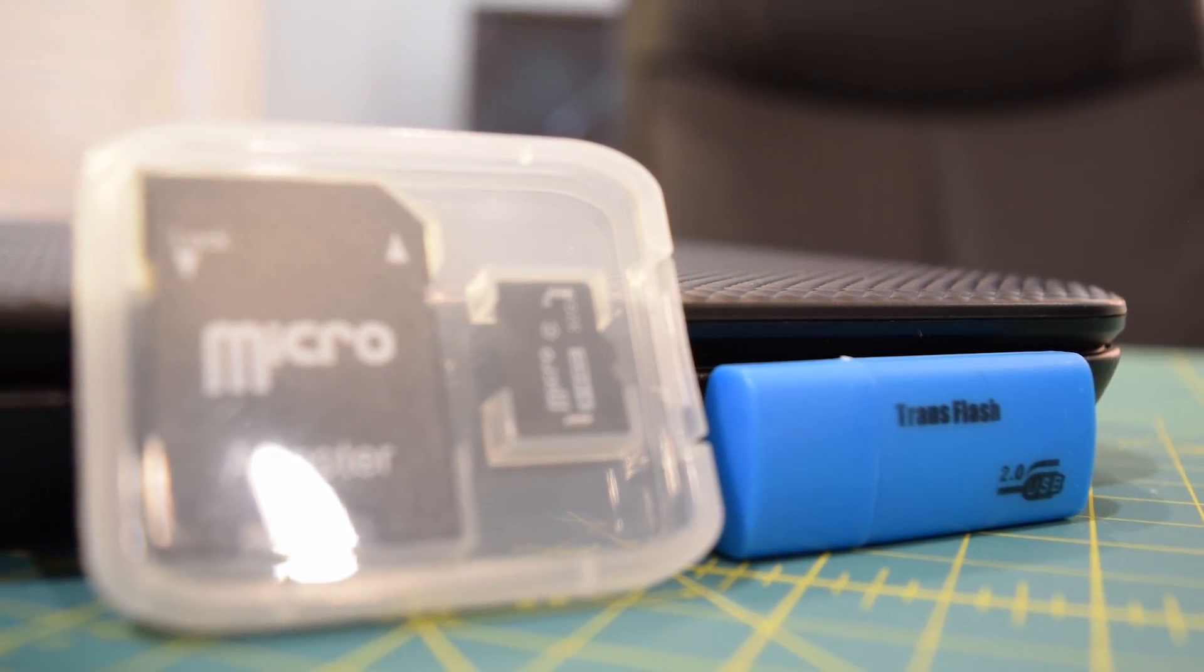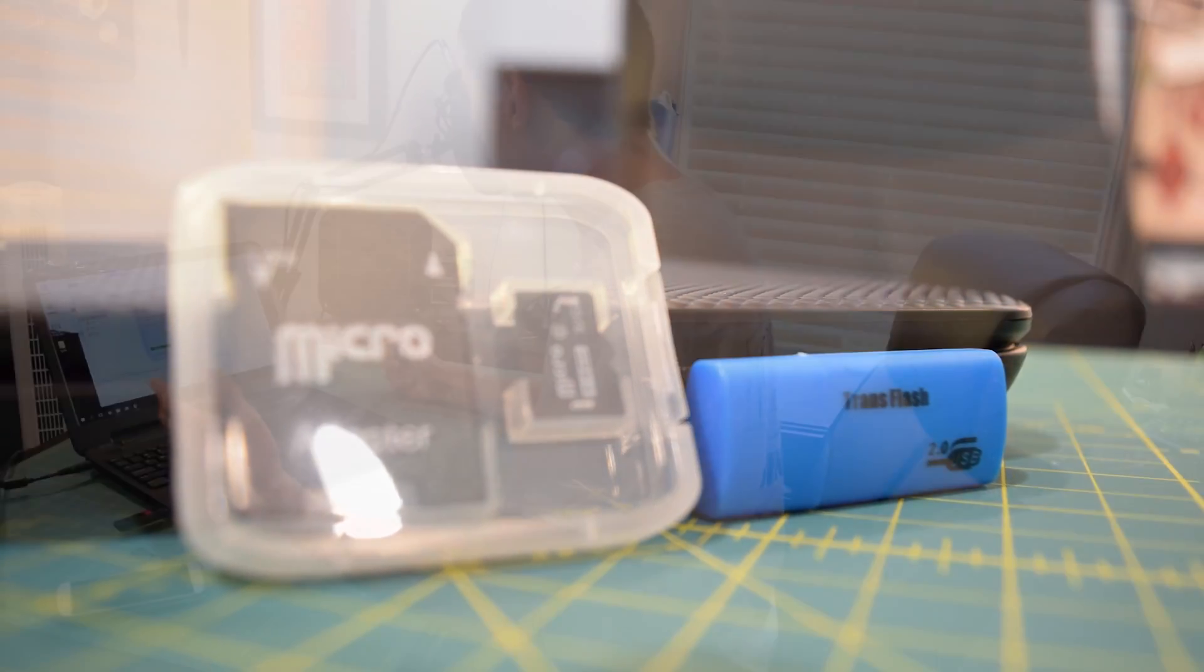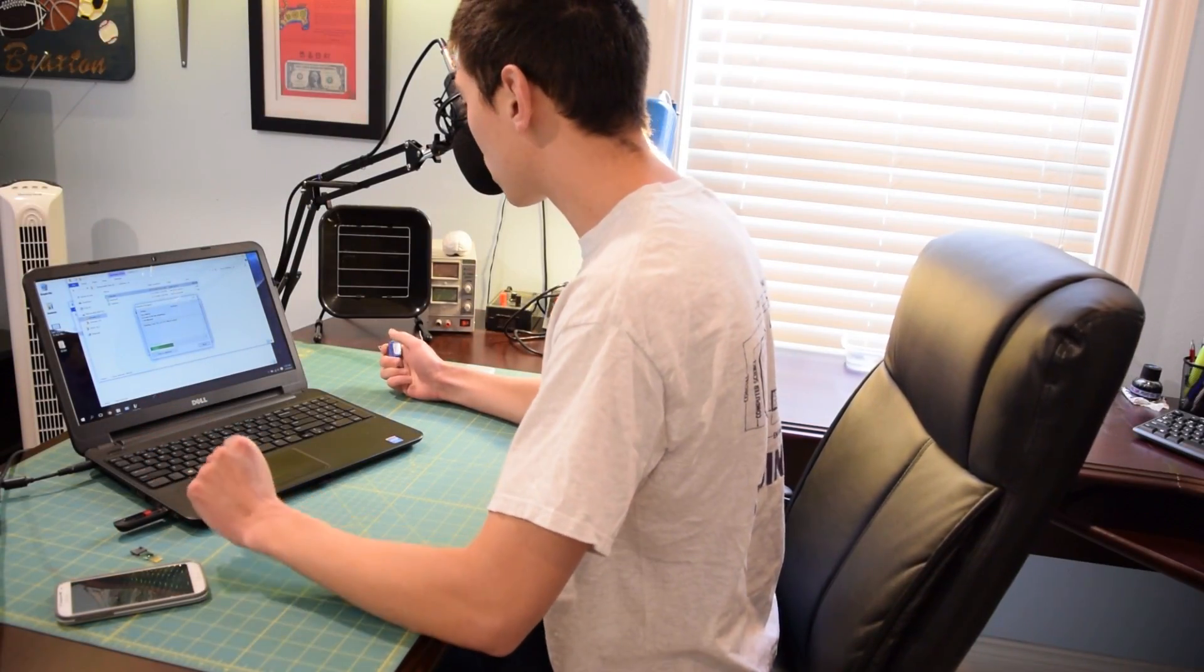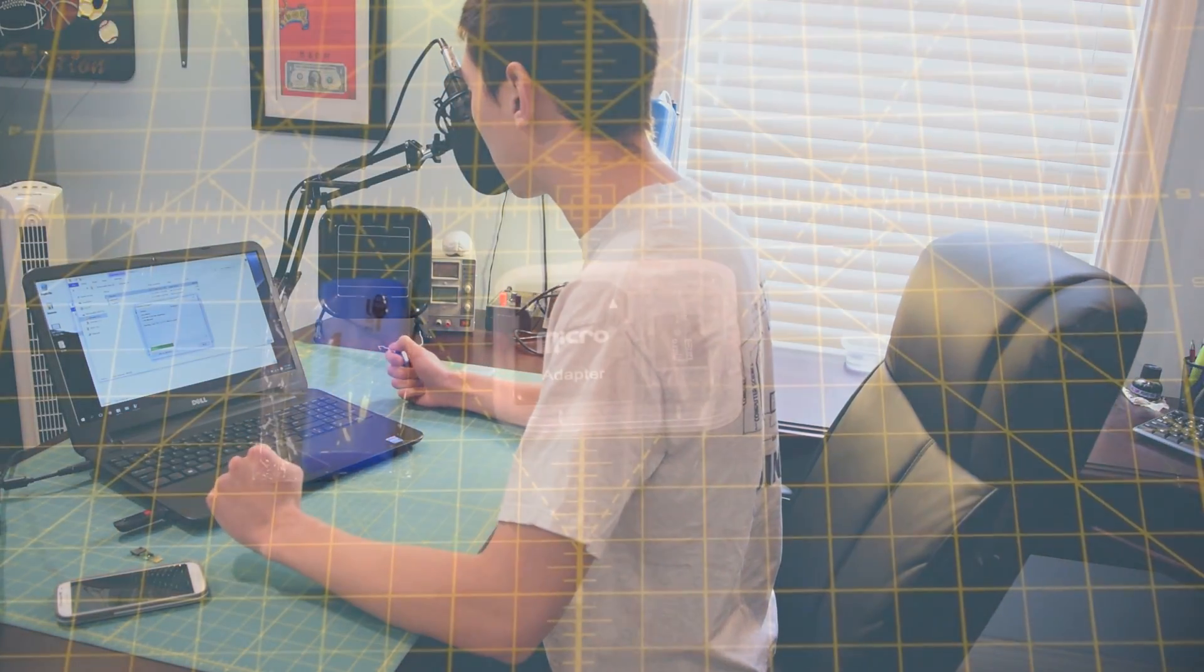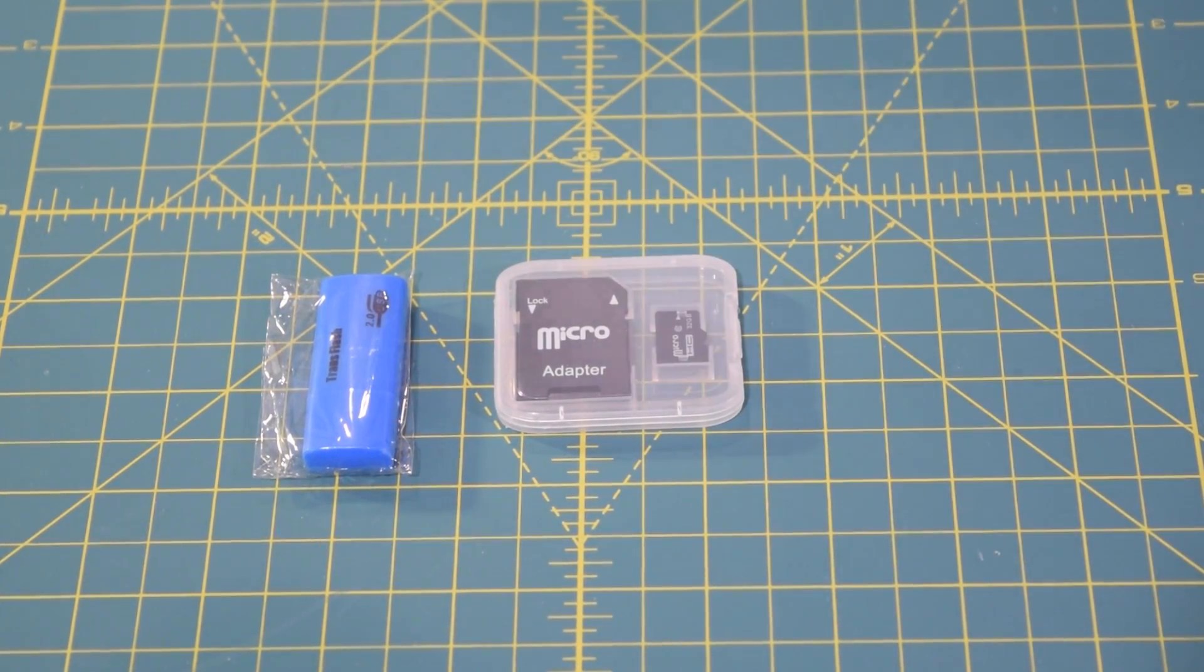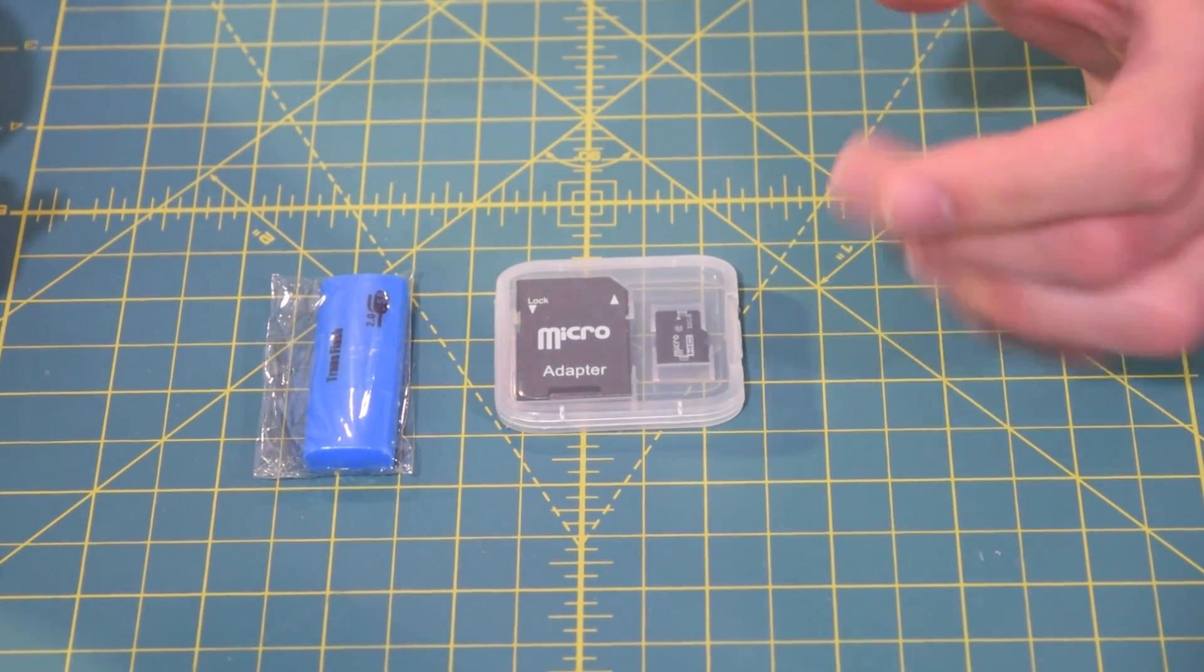So yeah, we were seeing speeds just under class 10 speeds. And I recorded a couple of clips on it, transferred some files over, and it worked okay as a four gigabyte micro SD card. But once again, nowhere near that advertised 32 gigabyte capacity, unfortunately.